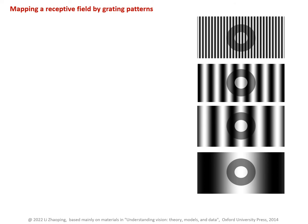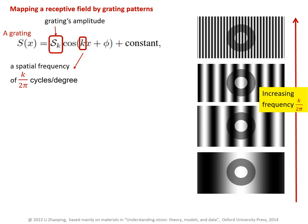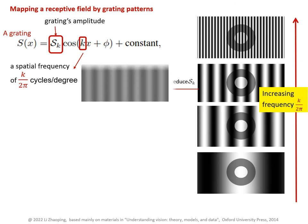We can describe each grating by such a sinusoidal function of spatial location x. This parameter k is for the spatial frequency of the grating. Each visual angle gives k over 2π cycles of the grating. So as the stripes become narrower, the frequency increases to give more grating cycles for a given spatial range. This S with this type of font marks the amplitude of the grating. It scales with the image contrast between the brightest and darkest parts of the grating. For example, this grating has a lower amplitude or a lower image contrast, but the other four gratings have the same high contrast.